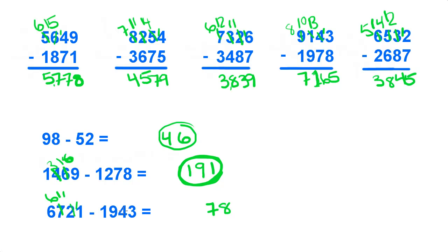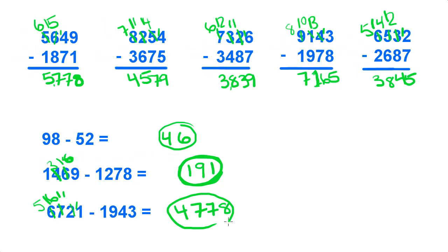6 minus 9, can't do that, borrow from the 6, make that a 5, 16. That's going to be 7. And 5 minus 1 is 4. And that is our answer. And that's all I have for subtraction with whole numbers.